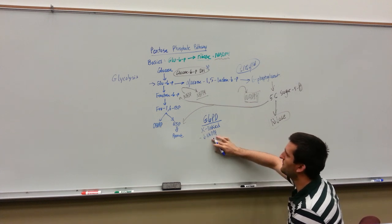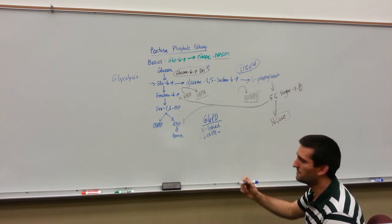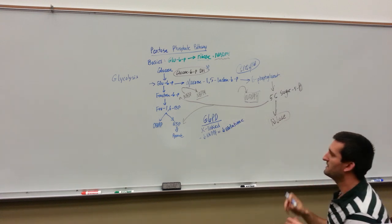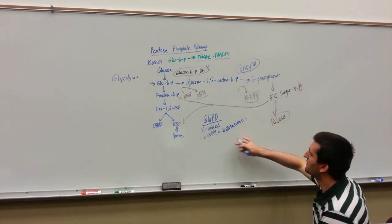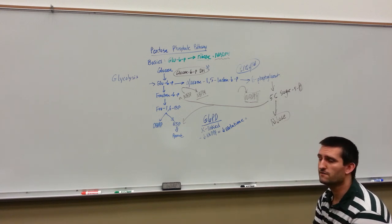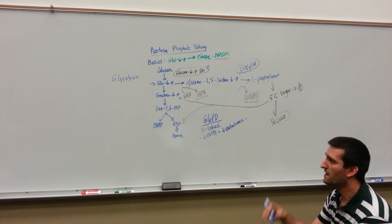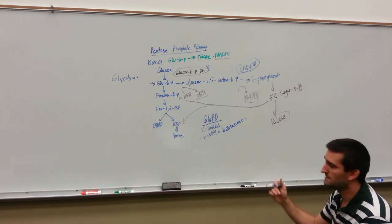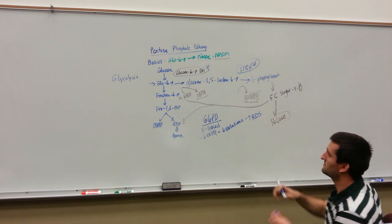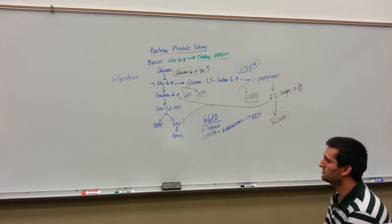This is a problem because NADPH is going to be used for glutathione production, which is an antioxidant in red blood cells. So we're going to have decreased glutathione, and that decreased glutathione means we're not going to be able to protect our red blood cells from oxidation. Oxygen is a very volatile molecule — even though our body needs it, oxygen is pretty dangerous. Our body has a lot of defenses, but oxygen by itself is very damaging.